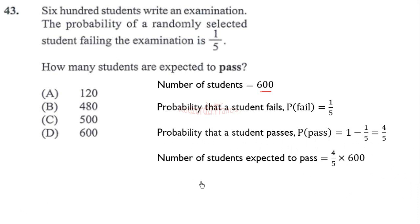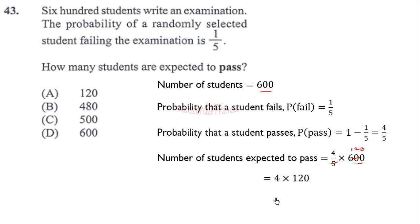To find the number of students expected to pass, multiply the probability of passing — the fraction four over five — by the total number of students, 600. Five goes into 600 giving 120, times four gives 480. Therefore, 480 students are expected to pass.